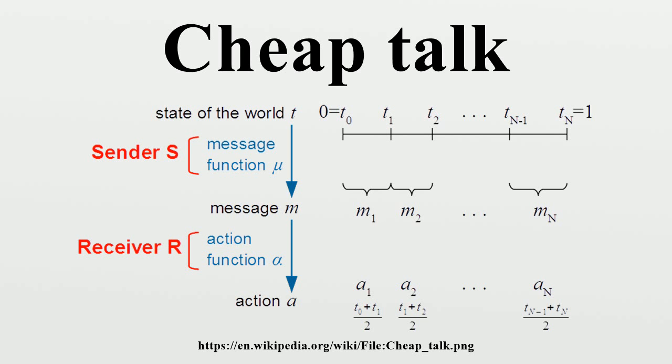n = 1: This is the babbling equilibrium. t_0 = 0, t_1 = 1, a_1 = 1/2 = 0.5.